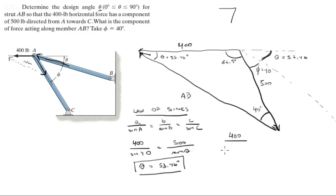So what you're going to do is 400 over the sine of 40 degrees is equal to member AB over the sine of 86.5. If you solve for AB, you're going to get that this is equal to 621.1.